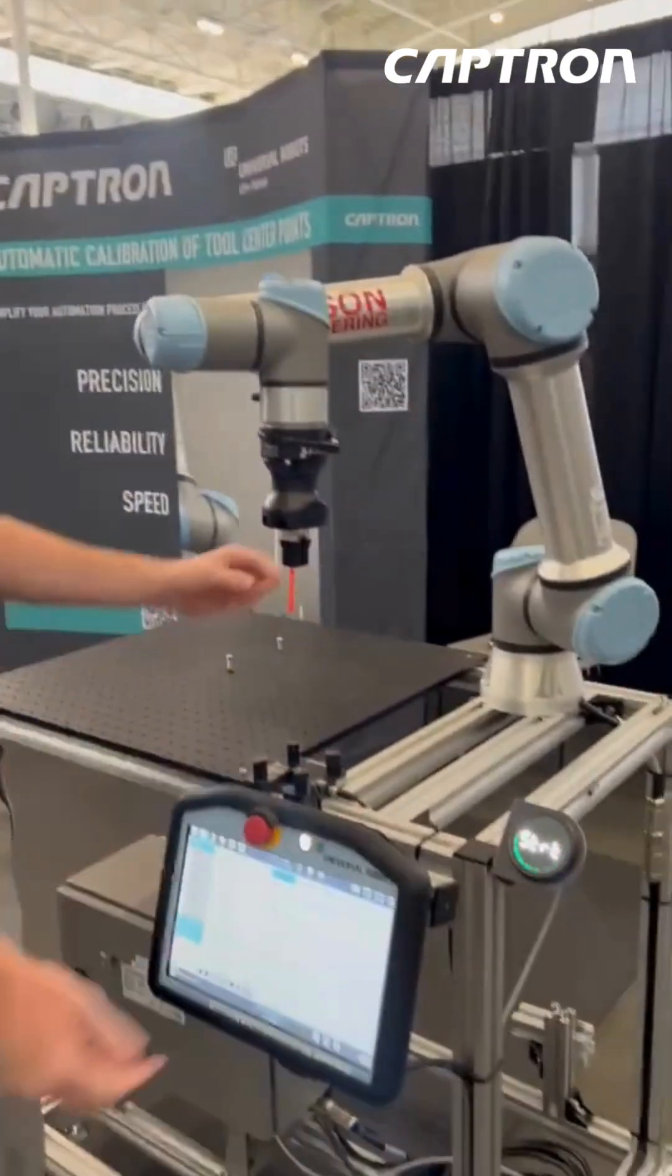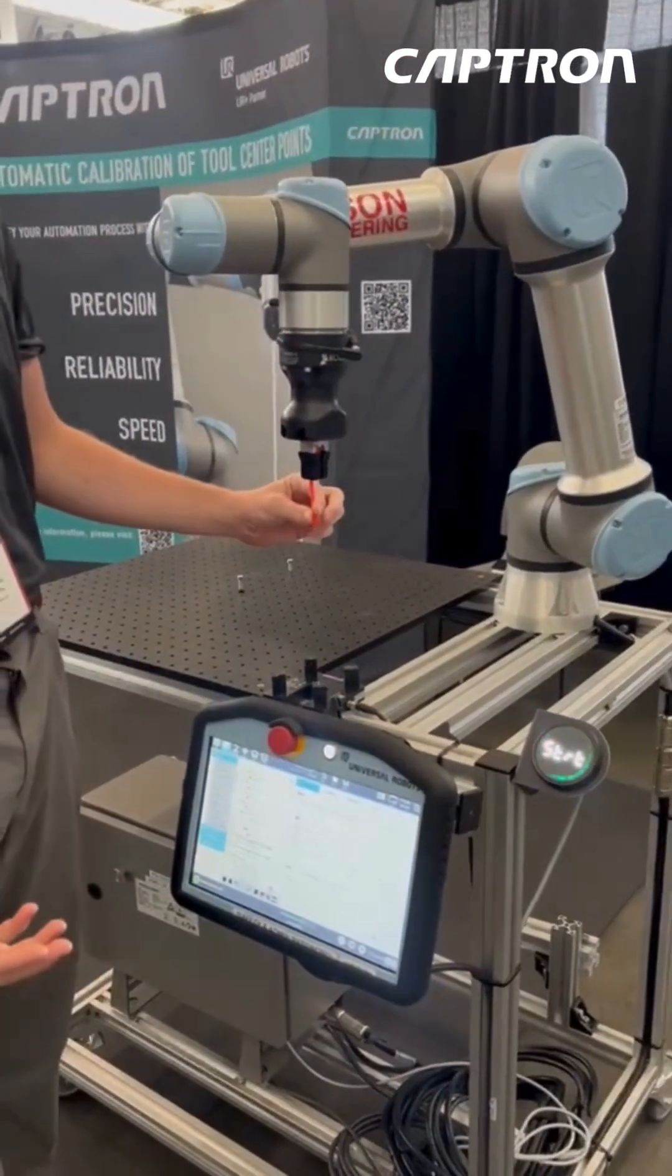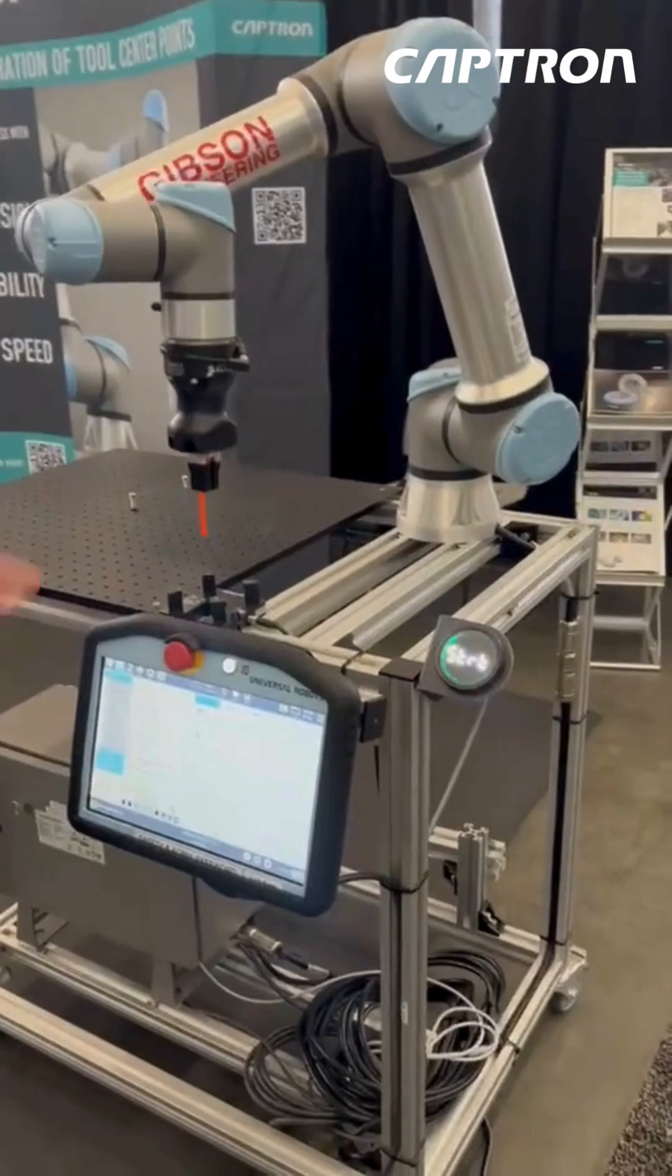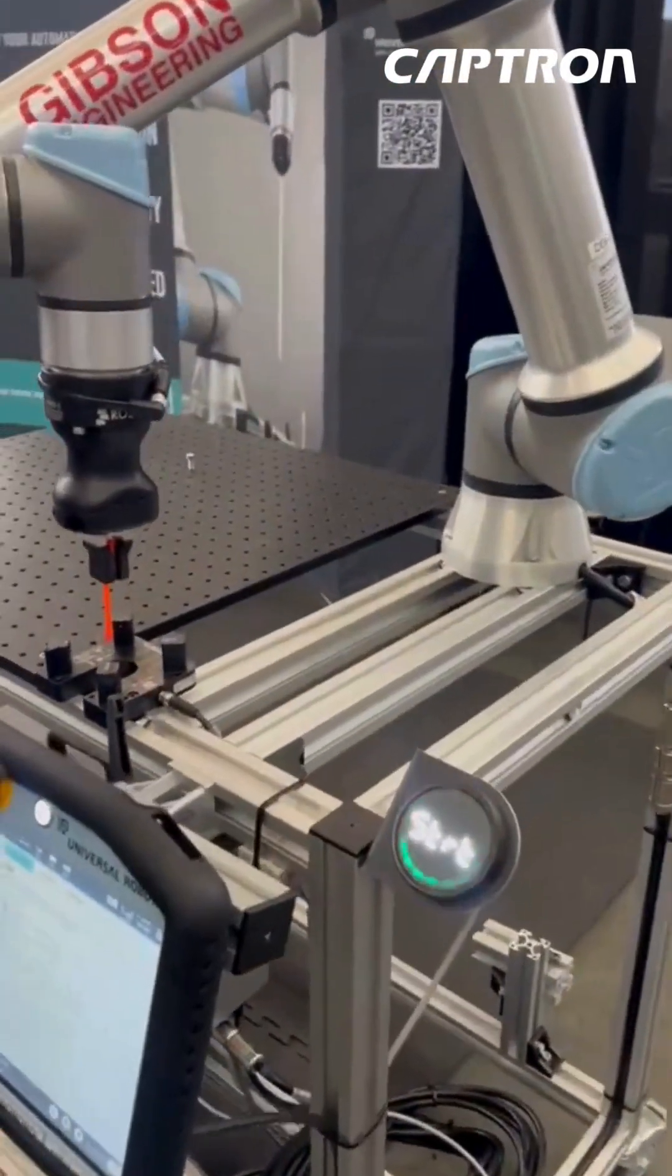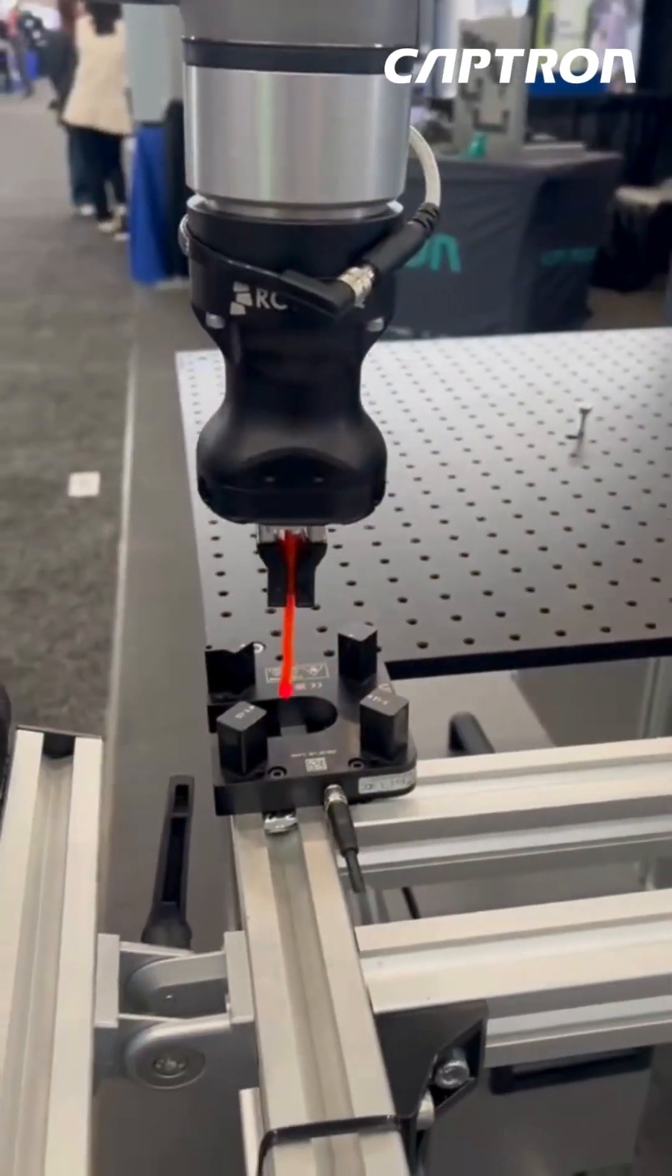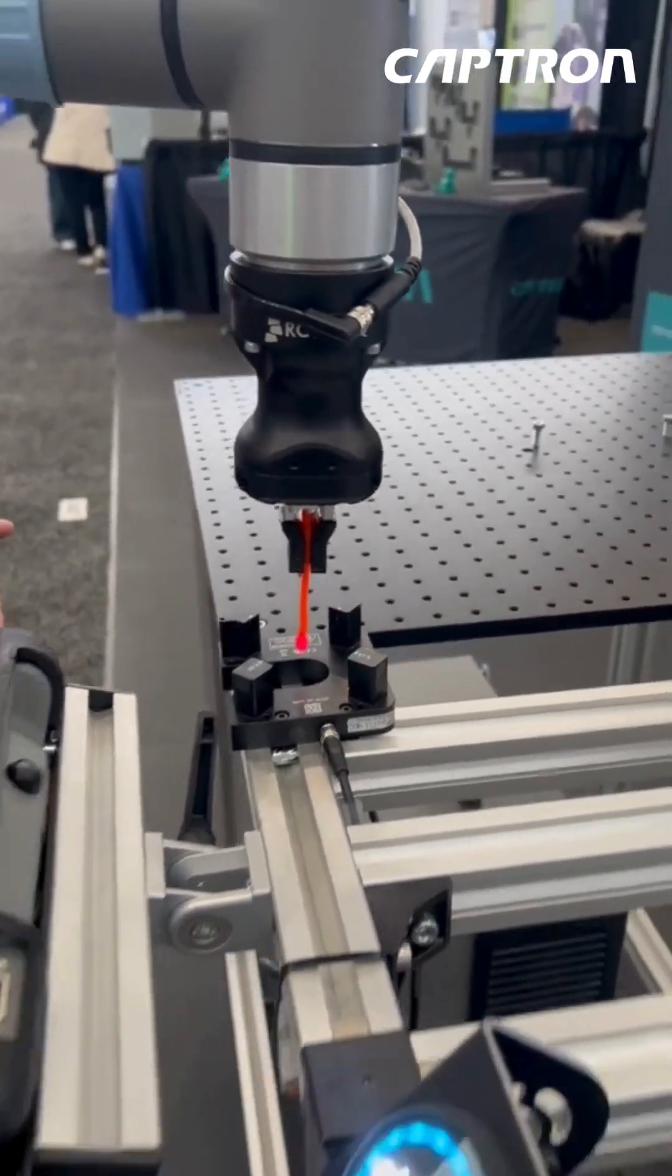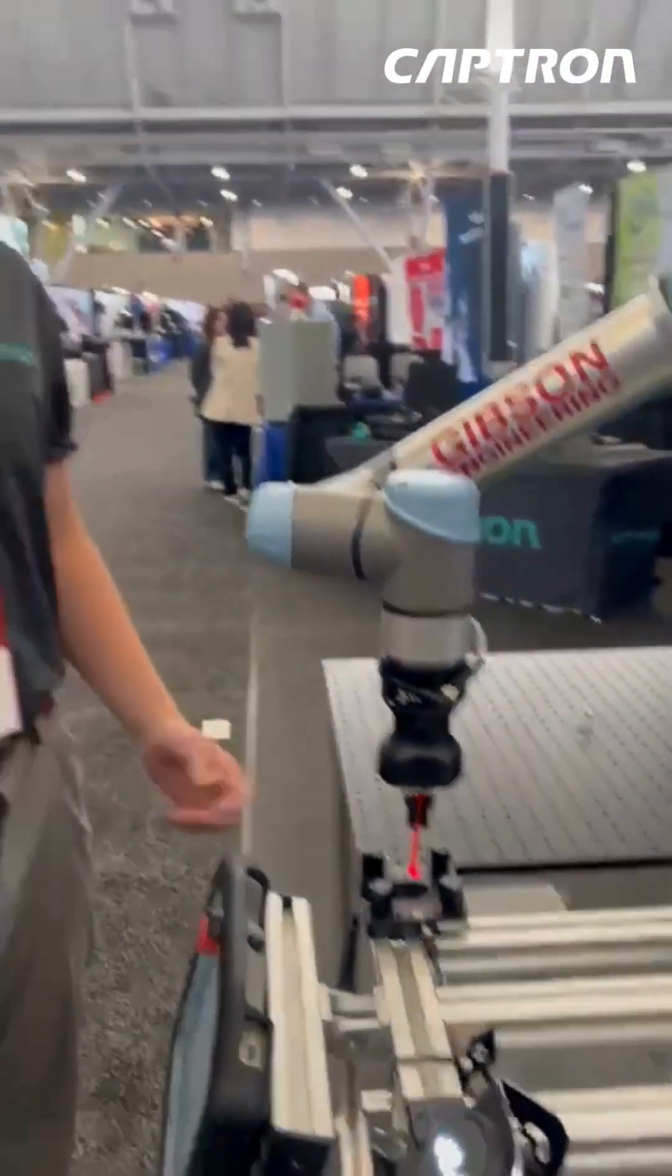With this software, no matter what happens to your tool, if it were to get bent, this optical sensor helps ensure accuracy without having an operator babying the robot all day and doing the four-point method and tool changes.